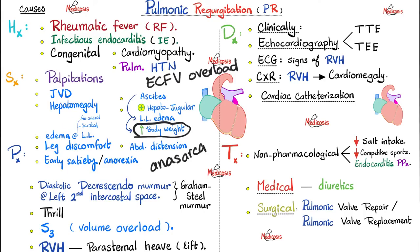On physical examination, expect a diastolic decrescendo murmur at the left second or third intercostal space, sometimes accompanied by a palpable thrill at the same location. Volume overload creates an S3 gallop, and dilation with eccentric hypertrophy of the right ventricle can produce a palpable parasternal heave or lift. For diagnosis: we assess clinically, then do an echocardiogram — preferably with Doppler — to visualize backflow from the pulmonary trunk to the right ventricle. EKG shows right ventricular enlargement; chest X-ray shows right ventricular enlargement causing cardiomegaly. Cardiac catheterization may also help.